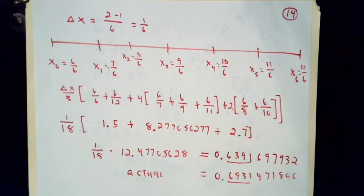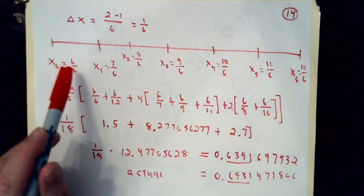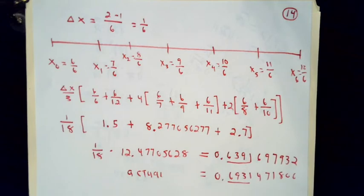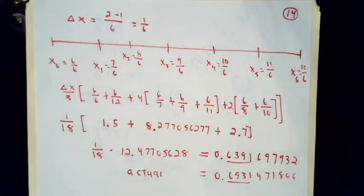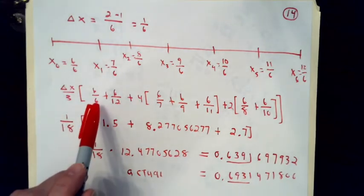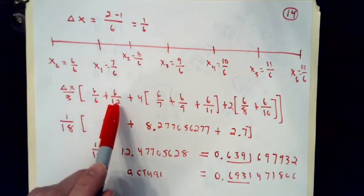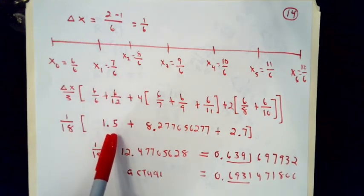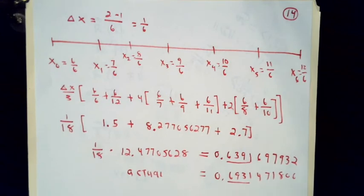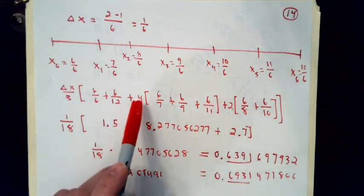This time, delta x is the width of the interval, 2-1, divided by 6, n is 6 here. But otherwise, we do very similarly to before. We figure out what the x numbers involved are. The function value f(x) here is 1/x, so the function values are just the reciprocals of the x values. I'll have delta x over 3—that's 1/6 divided by 3, which is 1/18. The function value at the left end is 6/6. The function at the right end is 6/12. I might as well go ahead and add those together as 1.5.